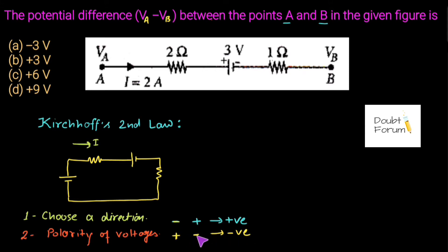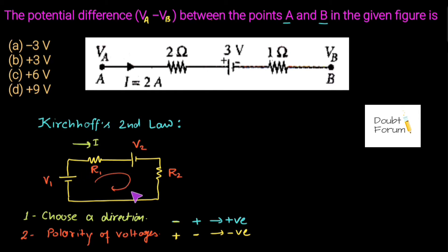Let's mark the circuit elements. Suppose this is a voltage source V1, the resistor is R1, this is voltage source V2, and the resistor is R2 ohms. To apply Kirchhoff's Voltage Law we first choose a direction — clockwise — and move in that direction analyzing each element in the closed loop. We start from this point, go around, and come back to the same point.